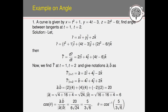Example: A curve is given by x = t² + 1, y = 4t − 3, and z = 2t² − 6. Find the angle between the tangents at t = 1 and t = 2. First, write the position vector: r = (t² + 1)i + (4t − 3)j + (2t² − 6)k. The tangent vector T = dr/dt = 2t·i + 4j + 4t·k.